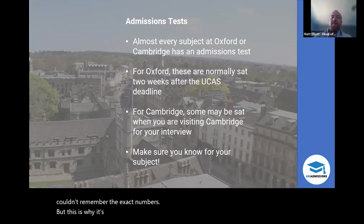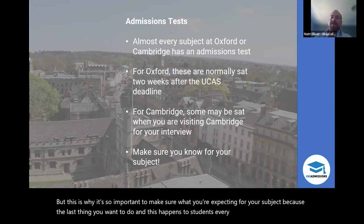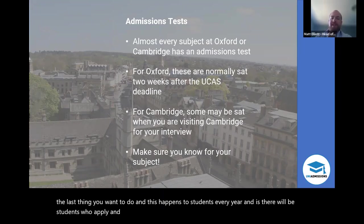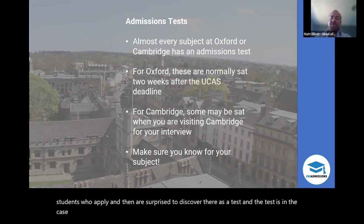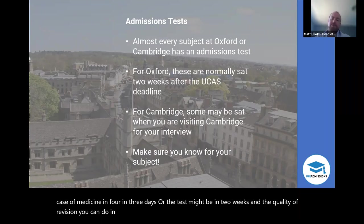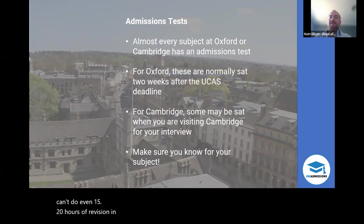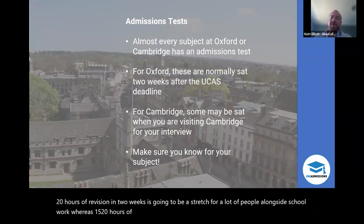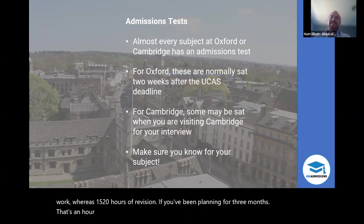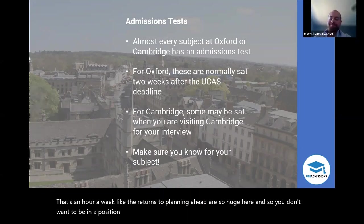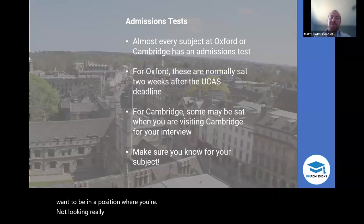It's so important to know what to expect for your subject, because every year students apply and are surprised to discover there is a test — and the test is in three days, or two weeks. The quality of revision you can do in two weeks is limited; even 15–20 hours is a stretch alongside schoolwork. But 15–20 hours of revision over three months is just an hour a week. The returns to planning ahead are so huge. You don't want to be caught out like the students who have only just found out about the test.